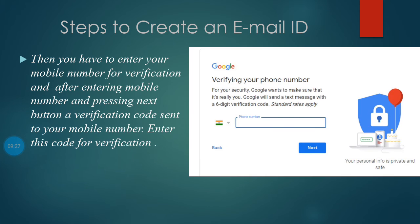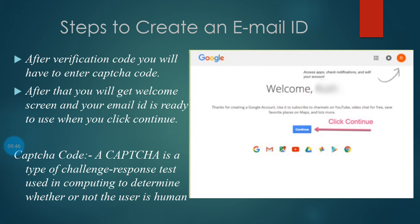Iske baad Next par click karenge toh yeh screen aayega — yahan apna mobile number submit karna hoga. Jaise hi mobile number submit karenge, us mobile par verification six digit ka code aayega, jo hum log enter karenge. Enter karne ke baad next screen par captcha code maangega. Wahan ek code likha hua rahega, uske neeche woh code enter karenge, aur jaise hi Next par click karenge, welcome screen aayega. Captcha code kya hota hai? Captcha code ek tarah ka response code hota hai jo test karta hai ki jo response diya ja raha hai woh human being ke dwara hai ya nahi.